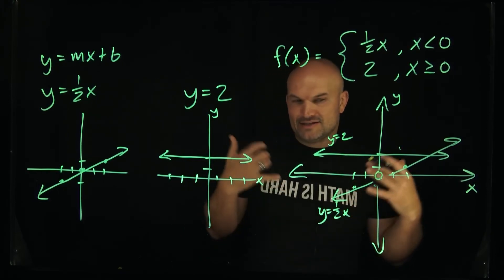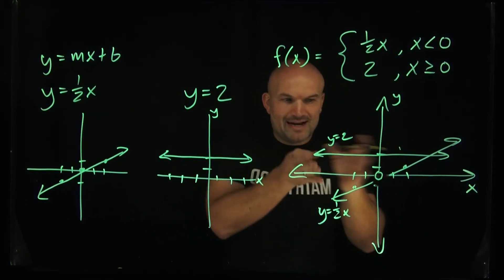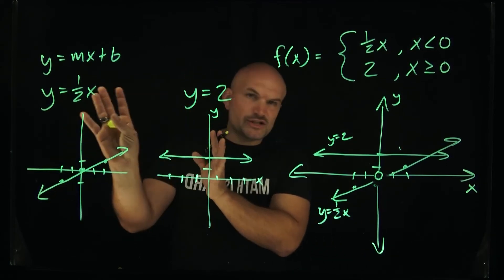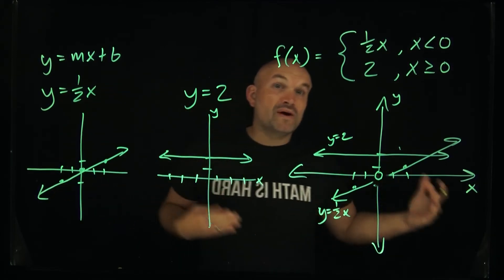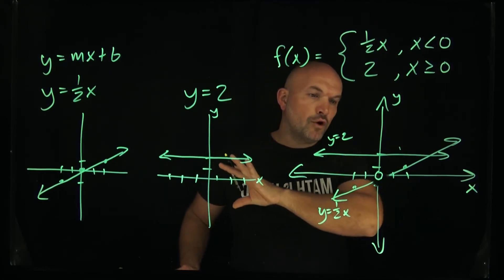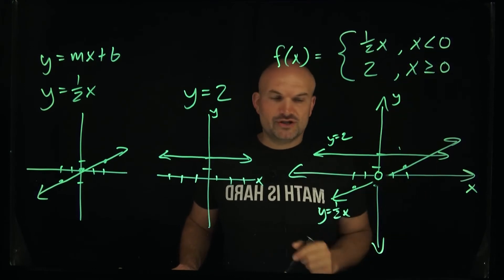The faster and better you get at graphing piecewise functions you don't actually have to go through this. You can just take each of these restrictions or equations or rules and then just graph them with their restriction. But if we're first learning we want to go through step-by-step. I like to graph them for all x and then apply the restrictions at the end.